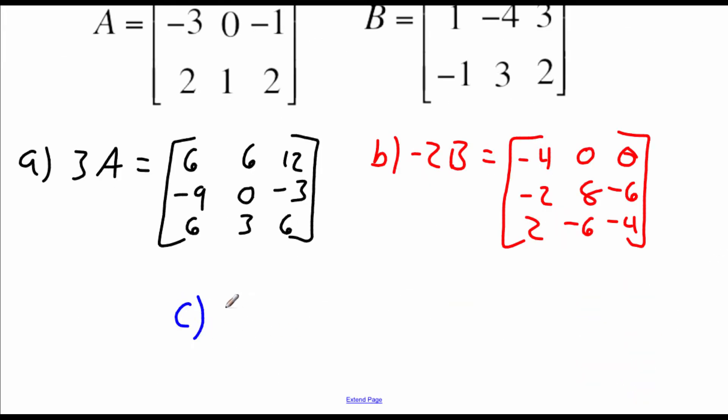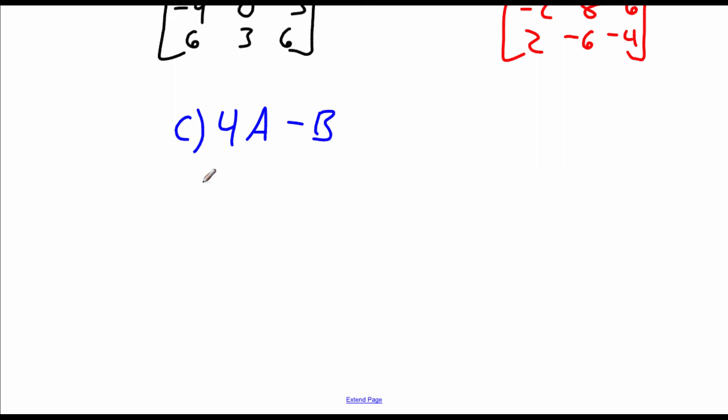In letter C the last thing we're doing is we're going to take 4 times matrix A and then subtract matrix B. So I'm going to look at doing that 4 times matrix A first. So if we distribute that 4 across the top row we should get 8, 8, 16. Middle row is negative 12, 0, negative 4. And bottom row goes 8, 4, 8.